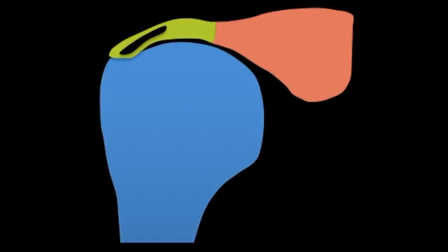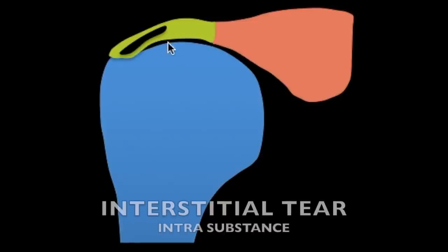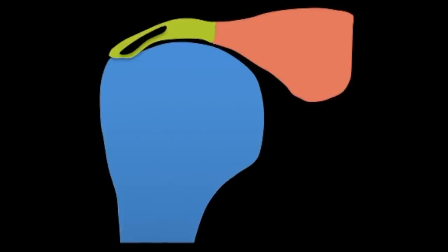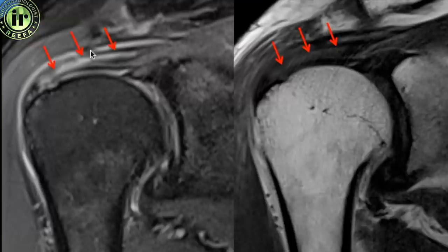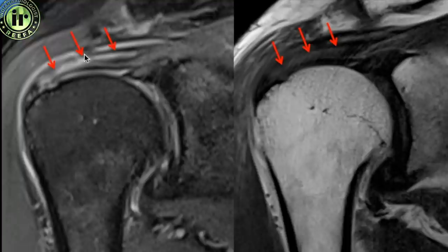In an interstitial tear, there is tearing within the substance of the tendon with both the articular and bursal surfaces intact. Because these tears cannot be seen by the orthopedic surgeon on arthroscopy, it is very important for radiologists to report them. You can identify a linear hyperintense signal within the tendon substance where the signal is as bright as the adjacent subacromial bursal fluid, confirming a long interstitial tear in the supraspinatus tendon.